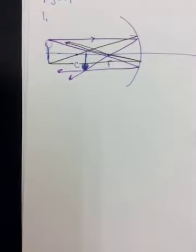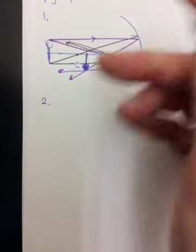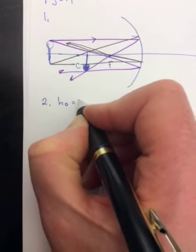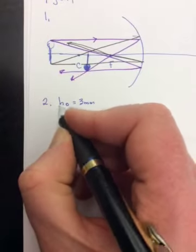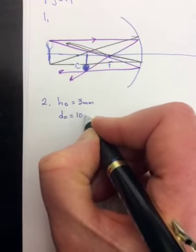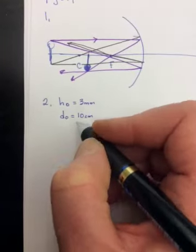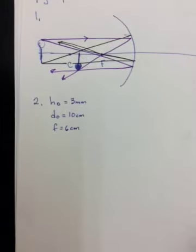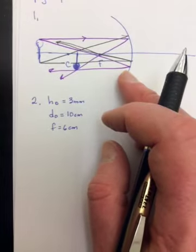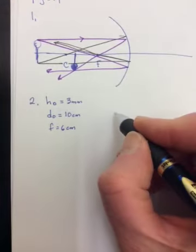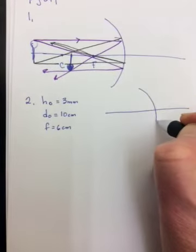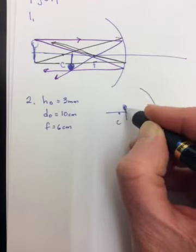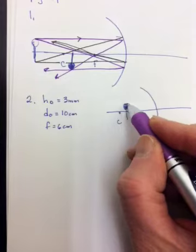Number two: a three millimeter high object, so ho is three millimeters, is 10 centimeters in front of a concave mirror. Do is 10 centimeters, having a focal length of six centimeters. Find the image by means of a ray diagram. It's gonna look like this, except it's gonna be between C and F this time. Here's my F, here's my C, here's my object.